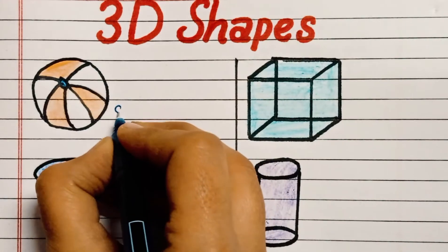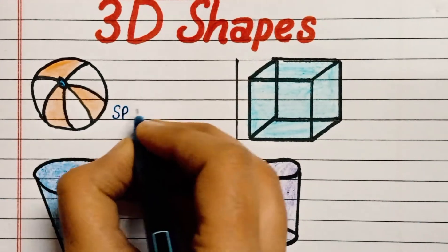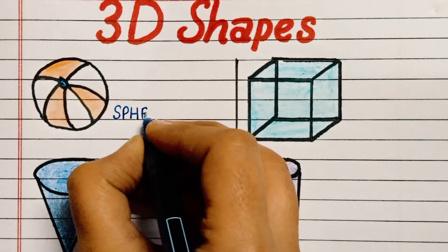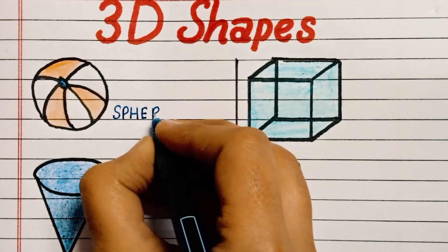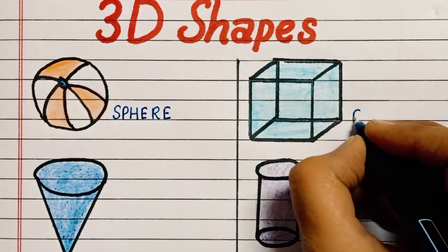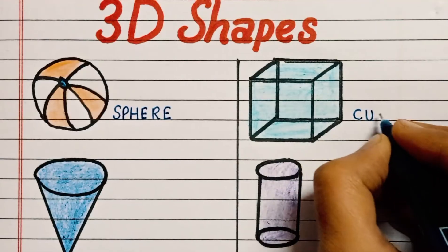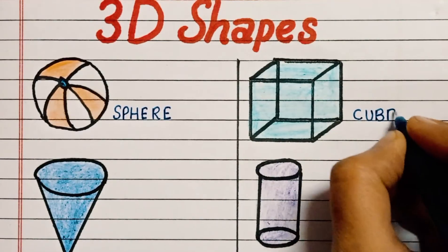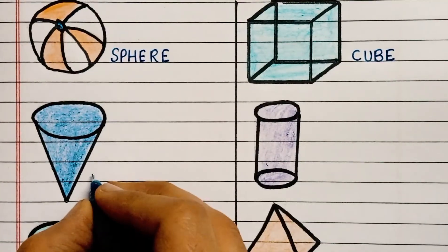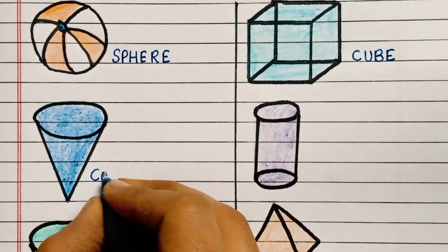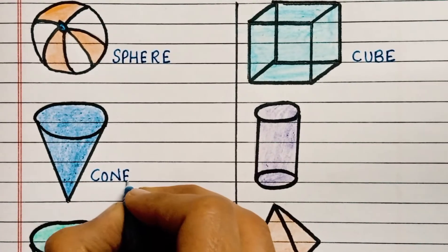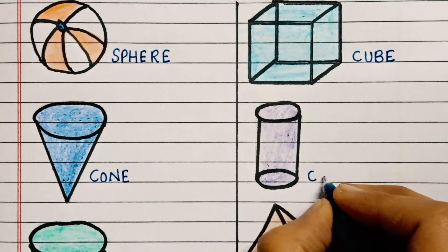Now let's see 3D shapes. S-P-H-E-R-E, Sphere. C-U-B-E, Cube. C-O-N-E, Cone. This is a cone shape.